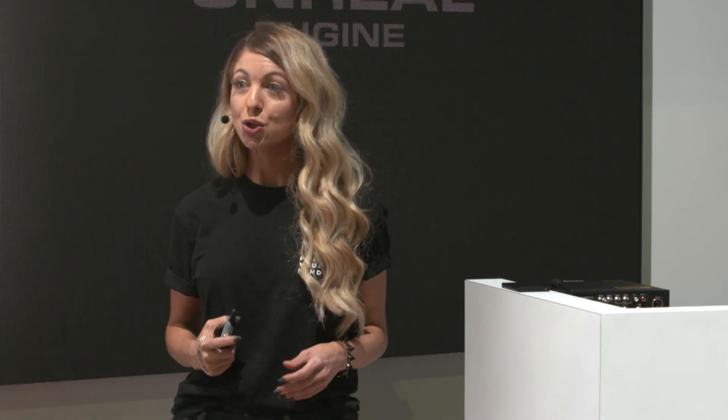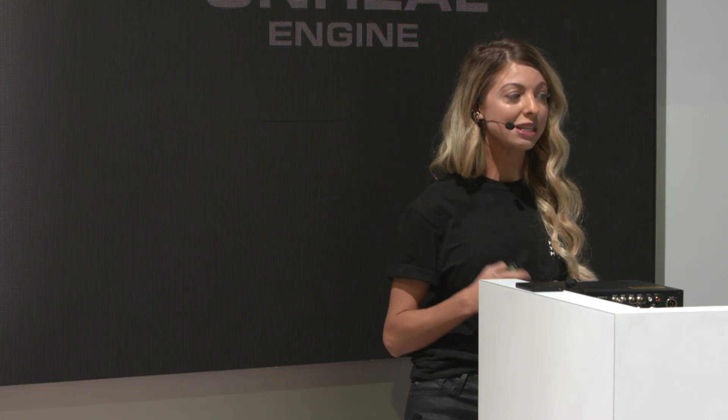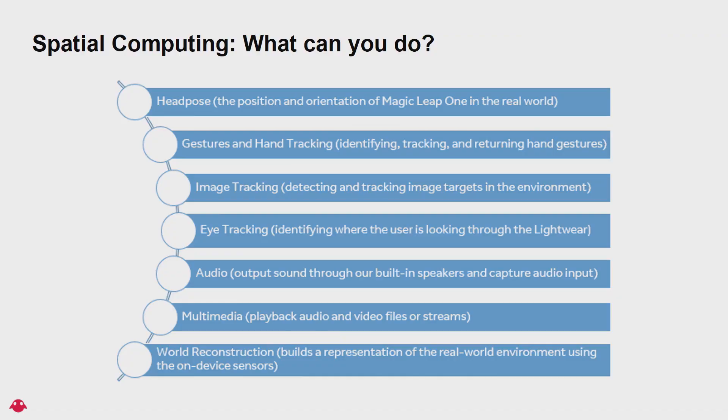In our most recent update last week, with skeletal tracking, we also introduced the hand mesh API, so now you've got access to an entire hand mesh. With image tracking, you can detect and track 2D image targets in the environment as you or they move across the real world space. And with eye tracking, you've got access to the 3D point in space where a user is looking, the centers of the eyes in 3D space, as well as blinks.